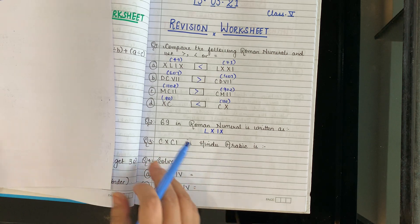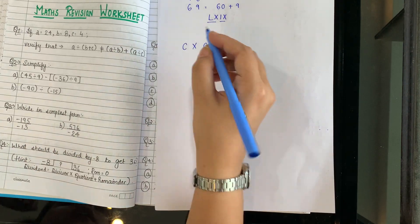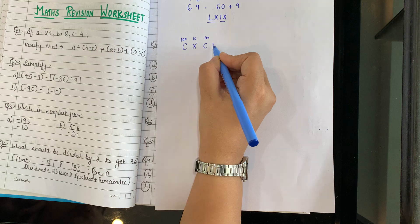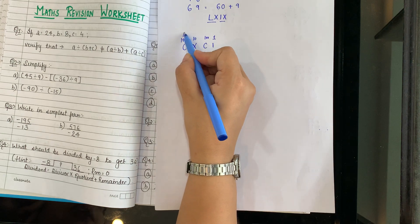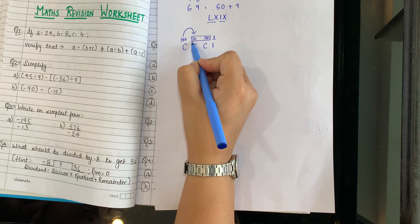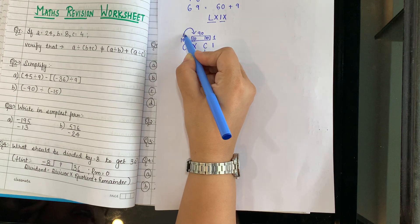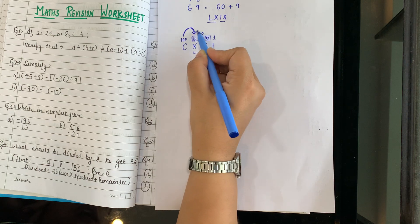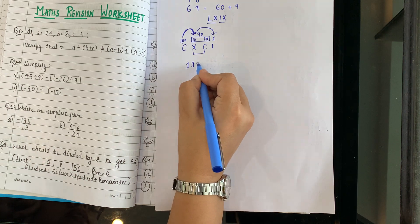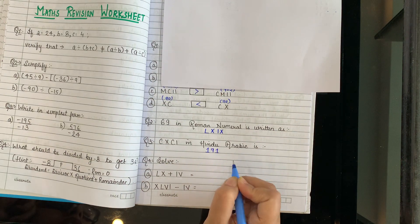Next: CXCI in Hindu-Arabic. C is 100, X is 10, C is 100, I is 1. Chote ke baad bada aa gaya — box bana ke: 100-10 = 90. Ab yahan pahunche: 100 se chota 90, aur 90 se chota 1. So 100 + 90 + 1 = 191. Answer is 191.